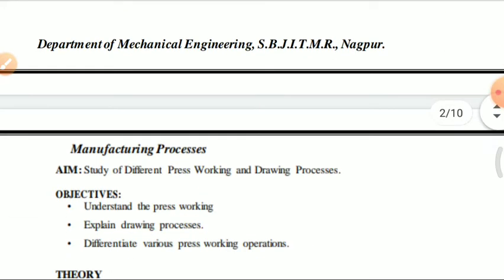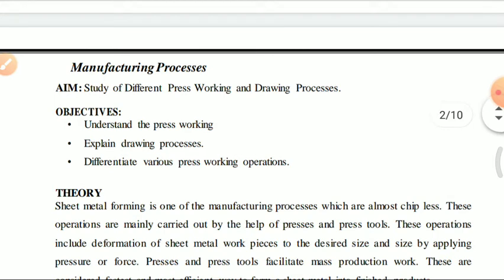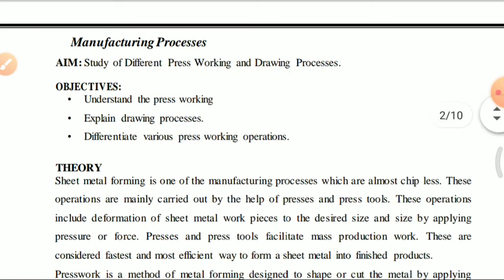The aim of today's experiment is the study of different press working and drawing processes. Our main objectives are: first, understand press working; second, explain the drawing process as related to press working; and third, differentiate various press working operations. You should be able to differentiate between these operations.